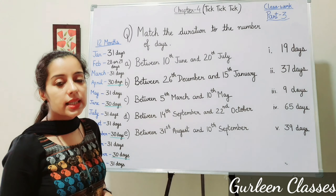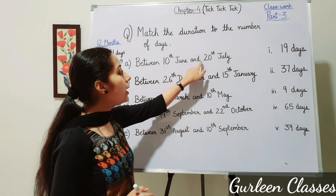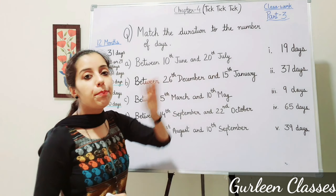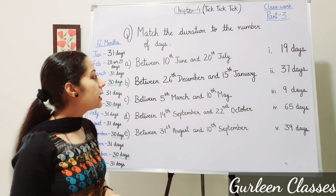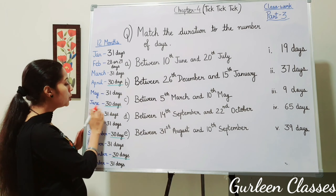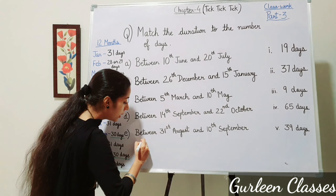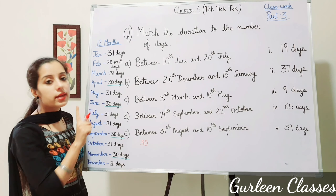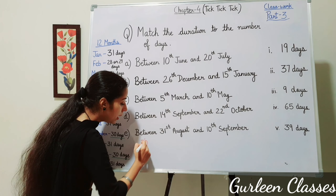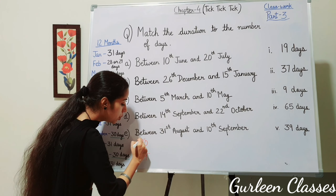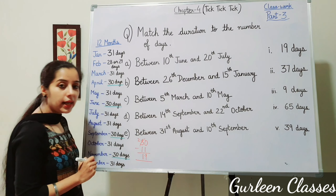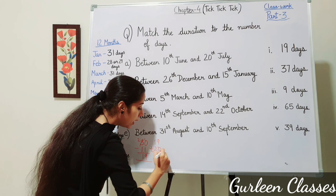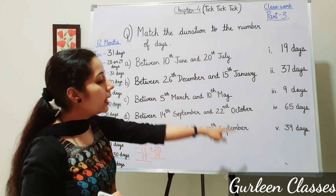Now let us do questions: Match the duration to the number of days. Part A: between 10th June and 20th July. June has 30 days. From 10th June, we count the remaining days: 30 minus 10 equals 20, but since 10 is not counted, it's 30 minus 11 equals 19. Then add 20 days of July: 19 plus 20 equals 39 days.